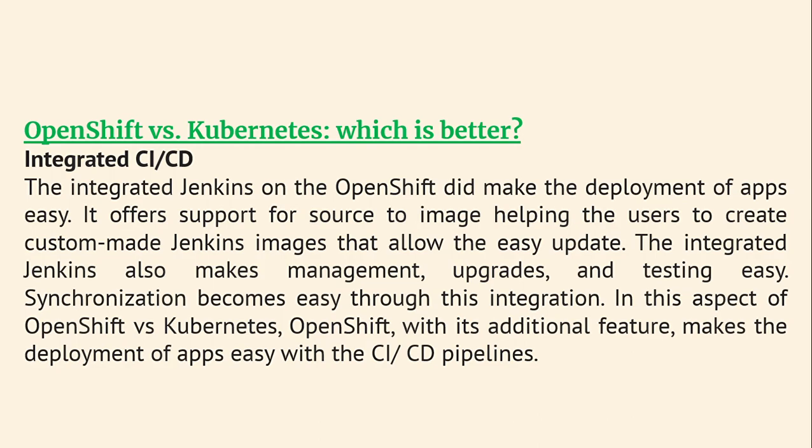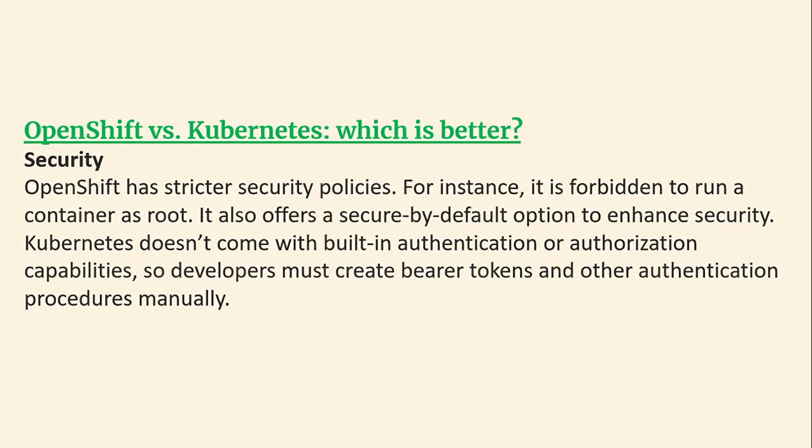Comparing OpenShift and Kubernetes based on integrated CI/CD: the integrated Jenkins in OpenShift makes deployment of apps easy. It offers source-to-image support, helping users create custom Jenkins images that allow easy updates. Integrated Jenkins also makes management, upgrades, and testing easier, and synchronization becomes straightforward. In this respect, OpenShift's additional features make app deployment easier with CI/CD pipelines.